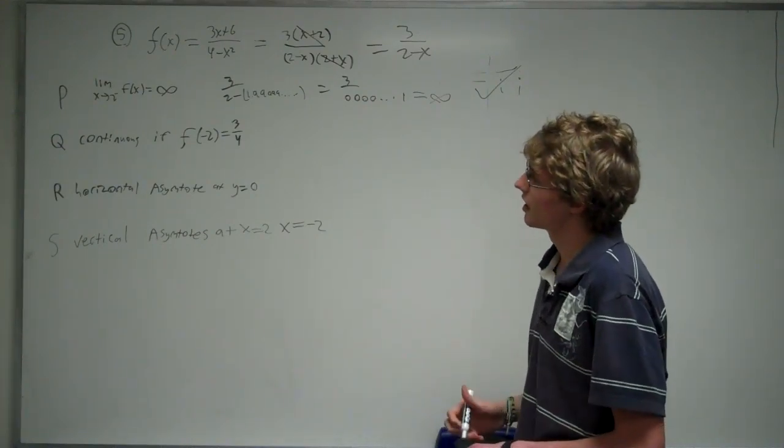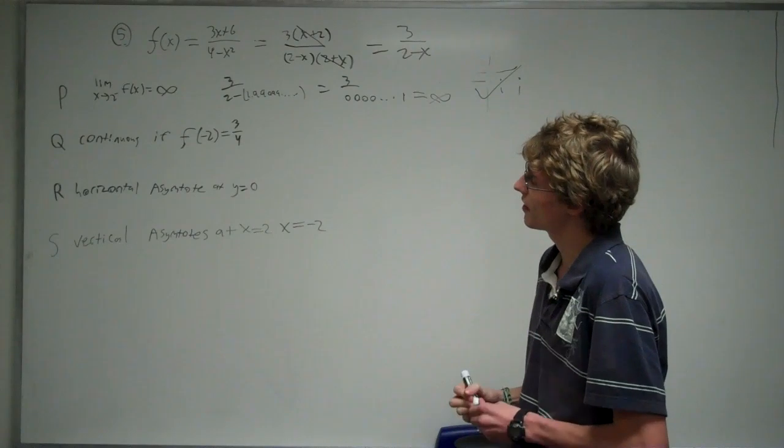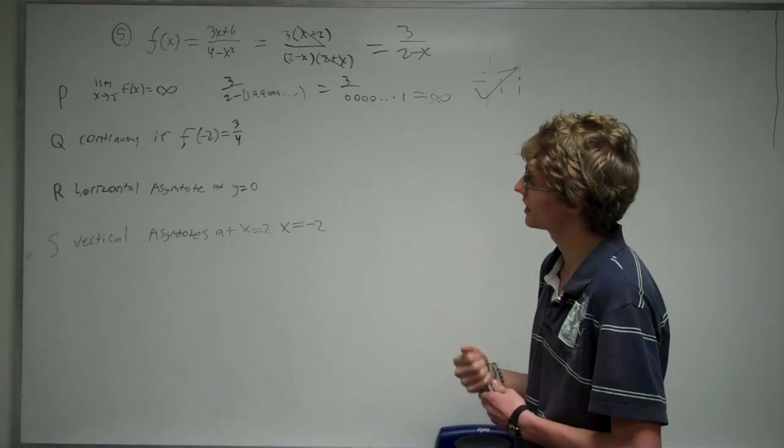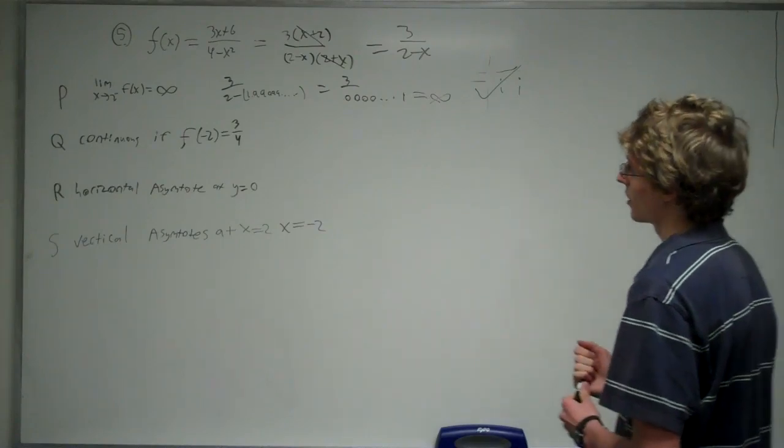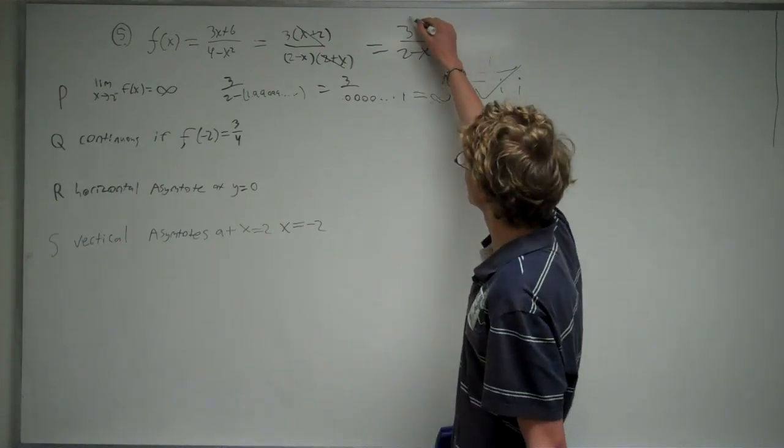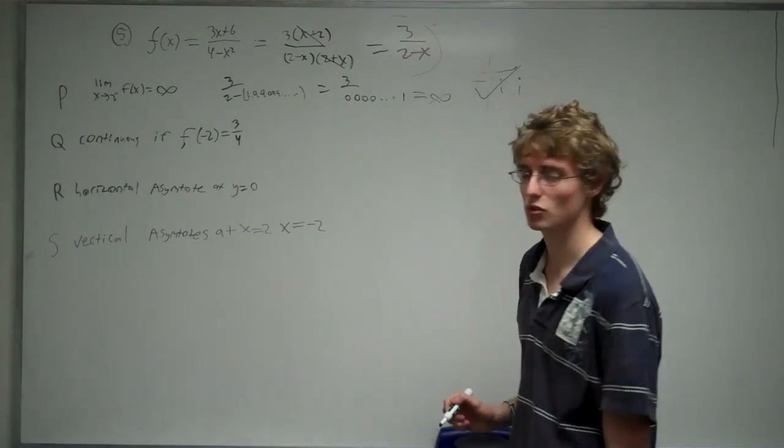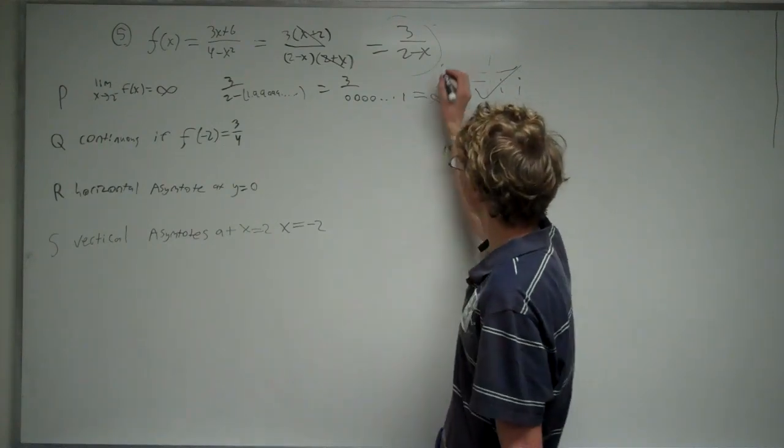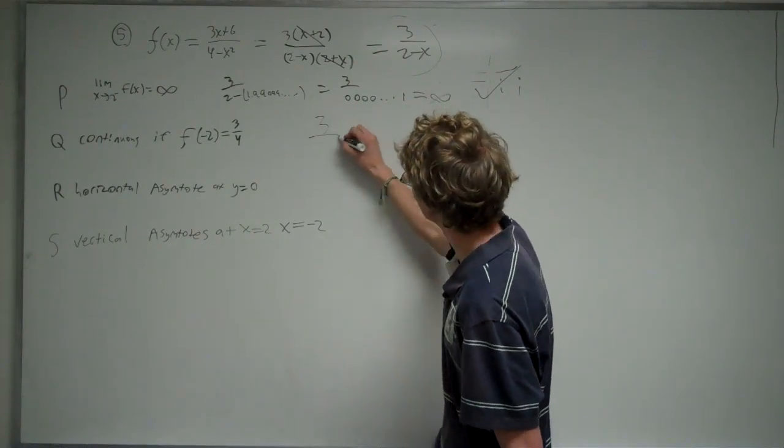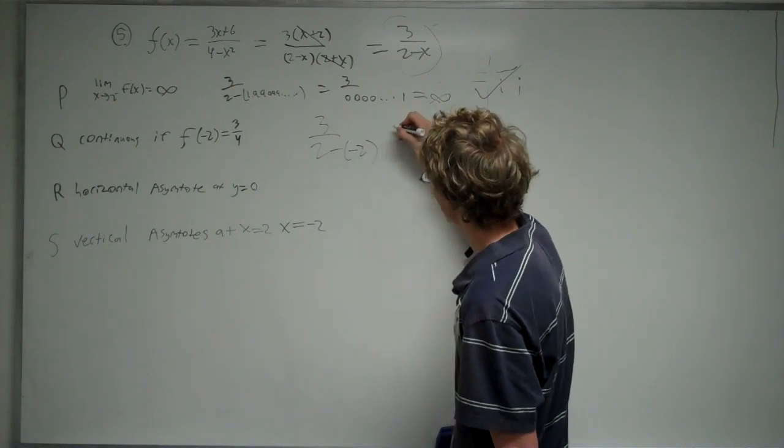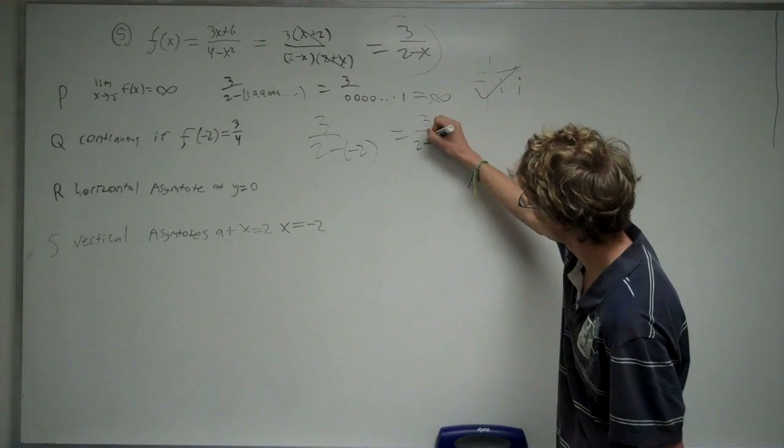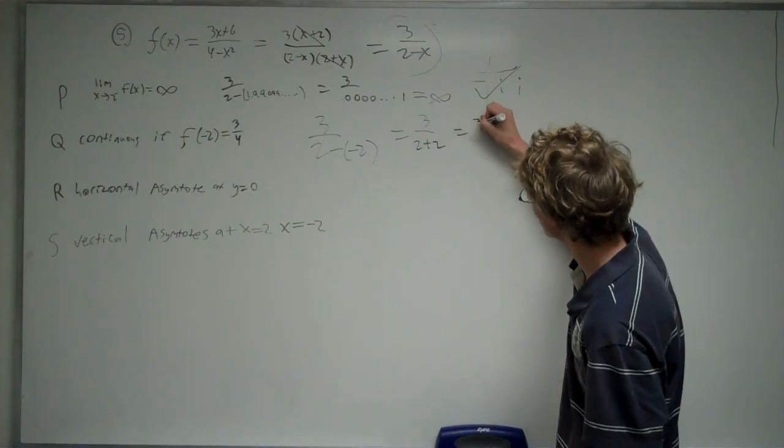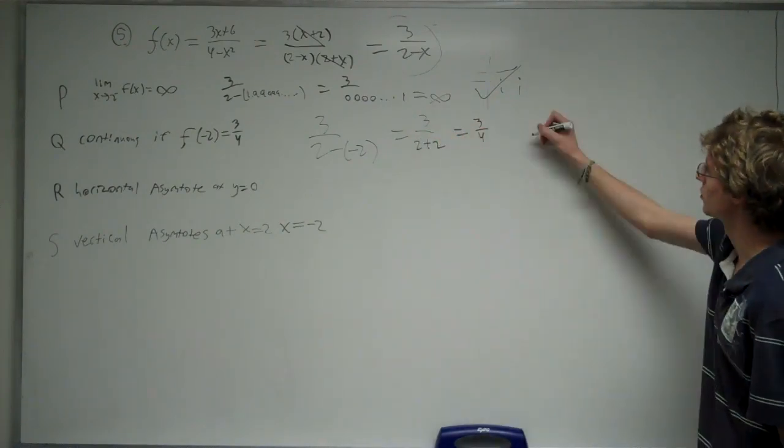Now for Q, it says it's continuous if f at negative 2 equals 3/4. To figure that out, we're going to take this simplified version here, plug in negative 2, and see what it equals. When we plug in negative 2 for this, you're going to get 3 over (2 minus negative 2), which is the same thing as 3 over (2+2), which is the same thing as 3/4. So that's also true.